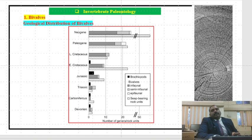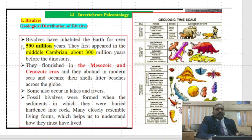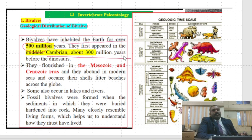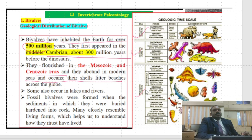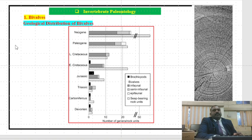Coming to the distribution of bivalves in the geological time scale: bivalves have inhabited the earth for over 500 million years, particularly from the Cambrian period. They flourished in the Mesozoic and Cenozoic eras and abound in modern seas and oceans. From the Paleozoic to Cenozoic we may have the abundance and distribution of bivalves in the geological time scale, which indicates that the proportion of bivalves compared to brachiopods is much higher — the proportion of brachiopods in the Cenozoic is much less compared to bivalves.